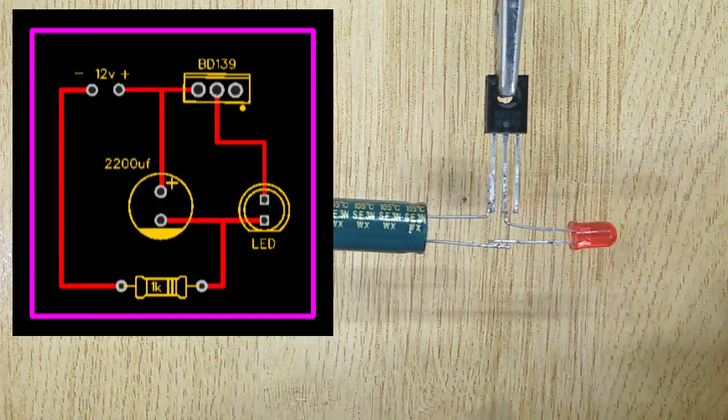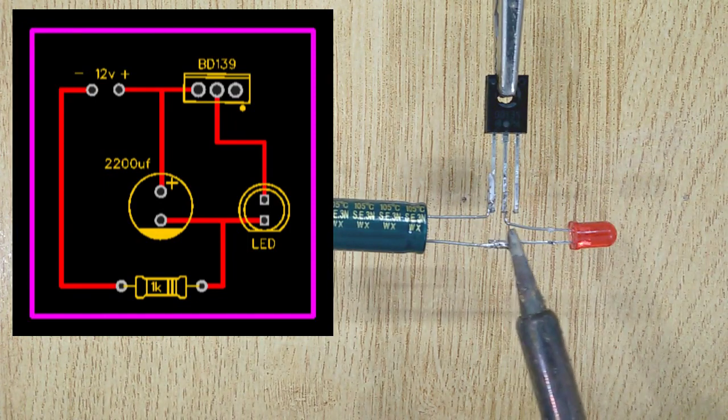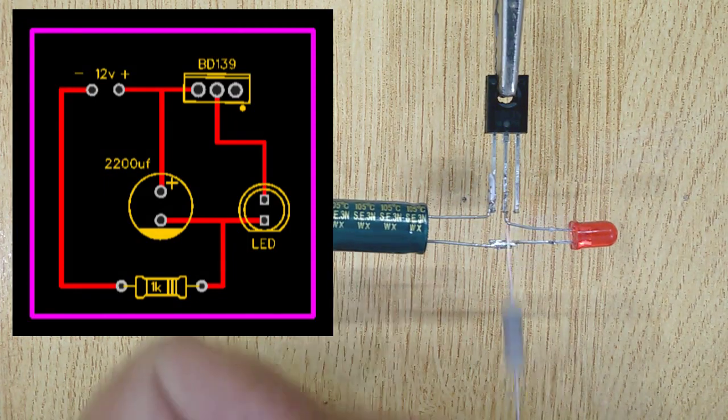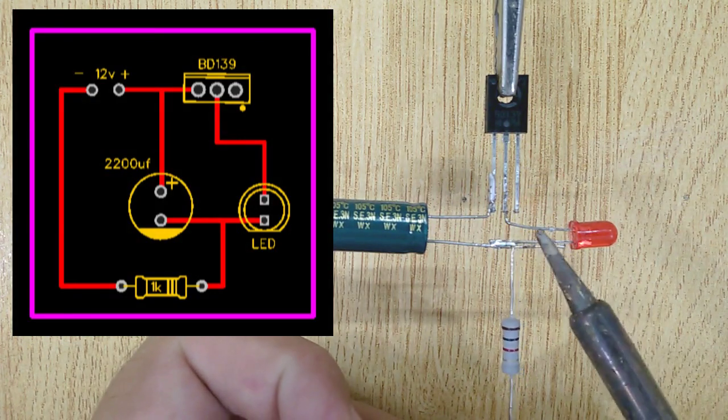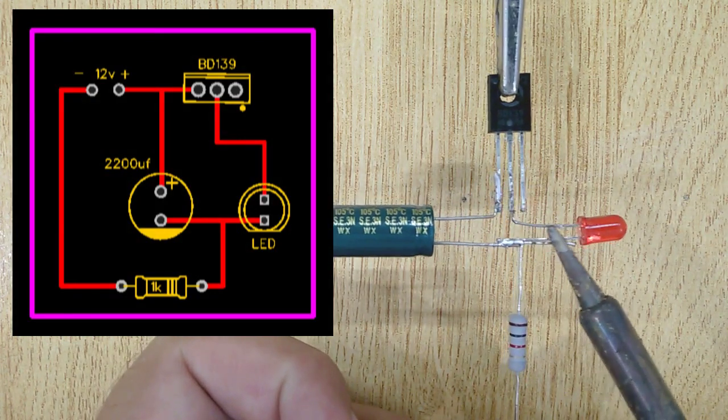After that, solder both negative pins of LED and capacitor to each other and at last, solder 1K resistor with the negative pin of LED.